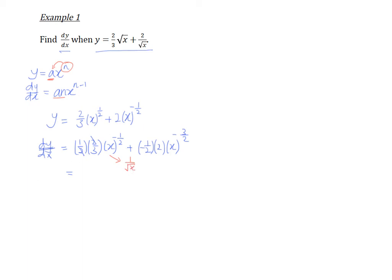So what happened here is that this term, it will become 1 over 3 square root of x, and this being a negative term, and it's a positive and a negative, it becomes negative, and again, this is simply 1 over x to the power of 3 over 2.